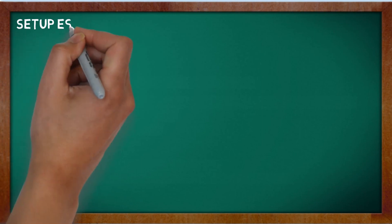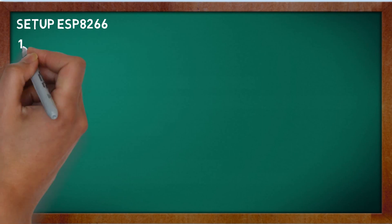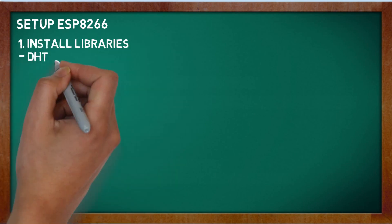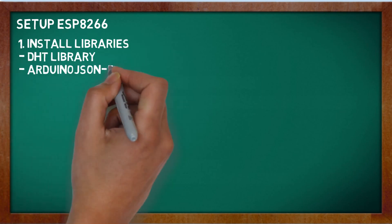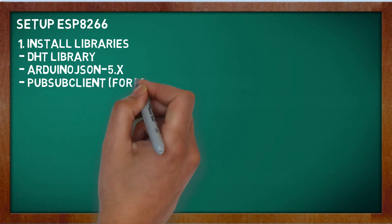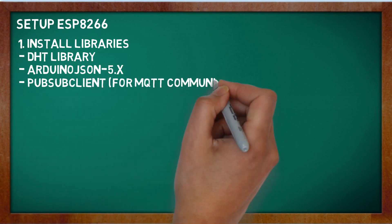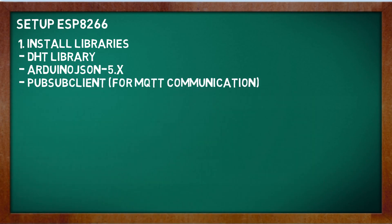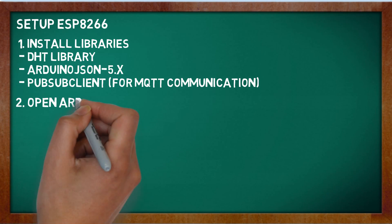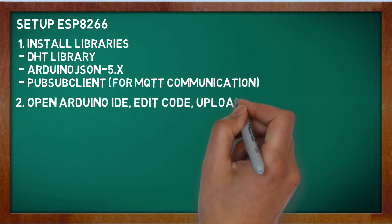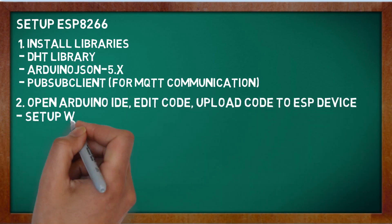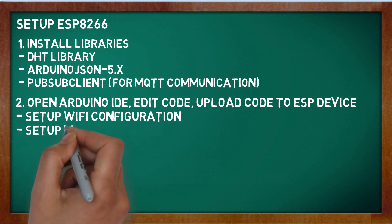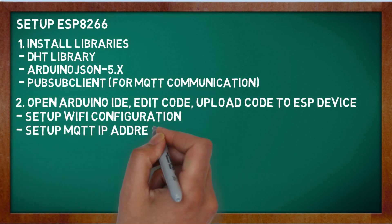In step 3, set up the ESP device. Install the required libraries for DHT11, JSON formatting, and MQTT connection. Open the Arduino IDE application, edit the code, set up your Wi-Fi connection and the IP address of your MQTT broker, then upload the code to the ESP device.